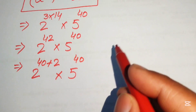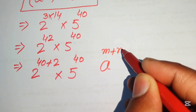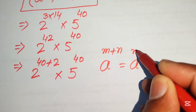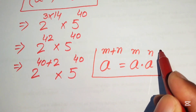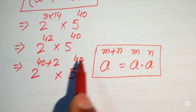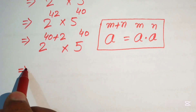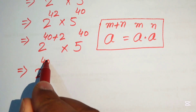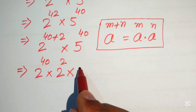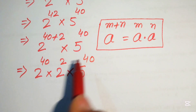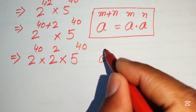Now we apply another exponential law: a to the power of m plus n equals a to the power of m multiplied by a to the power of n. Applying this rule to the first term, it becomes 2 to the power of 40, multiplied by 2 to the power of 2, and this is also multiplied by 5 to the power of 40.